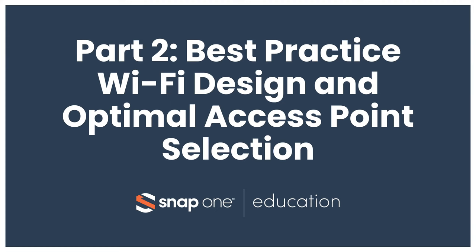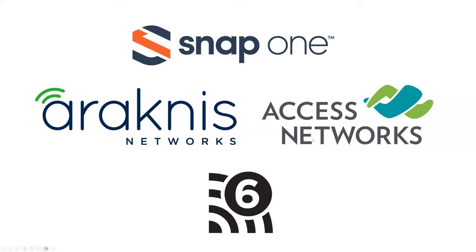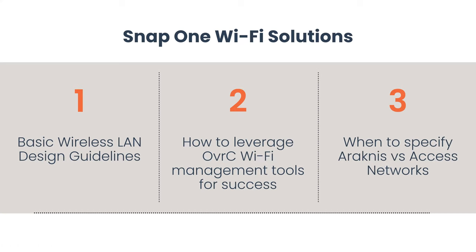Welcome to part two of our Wi-Fi 6 discussion. Today we'll talk about best practice Wi-Fi designs and how to decide which access points to use and why you'd choose one over another in a particular application. We'll cover basic wireless LAN design guidelines, cool features within Oversee that help tailor installations, and when to specify Arachnus versus Access Networks access points.